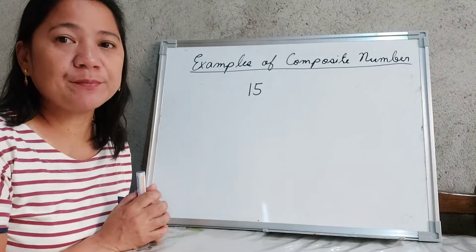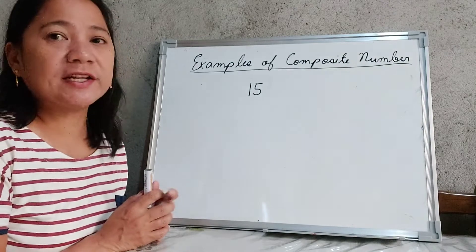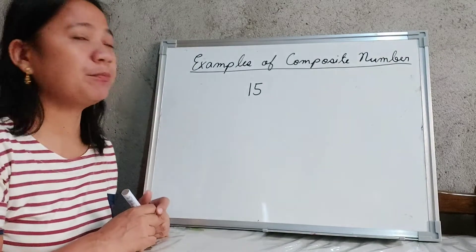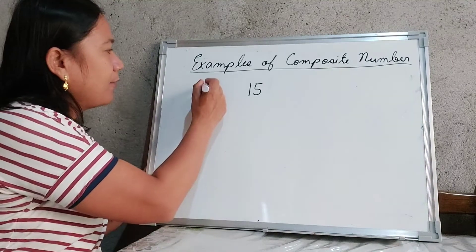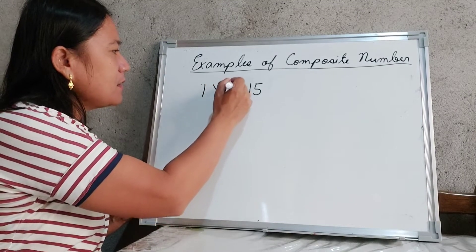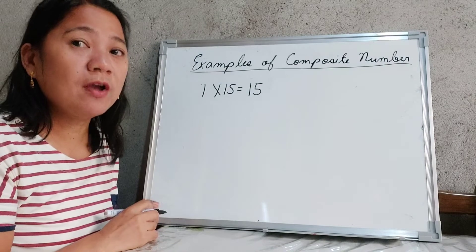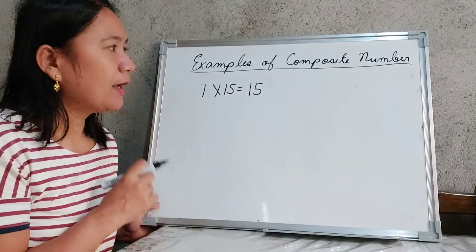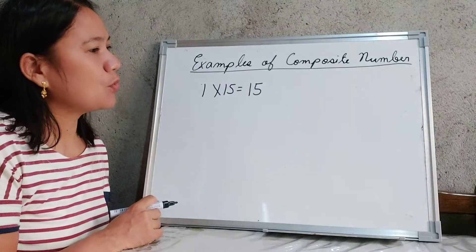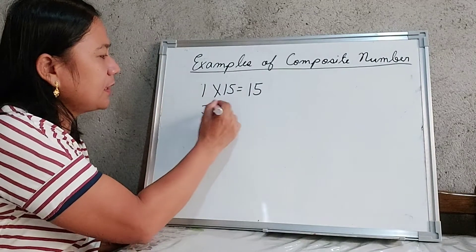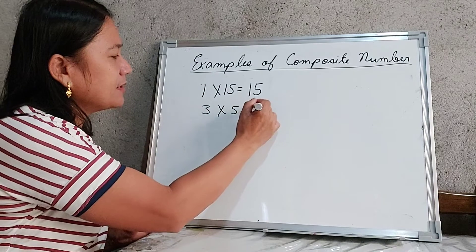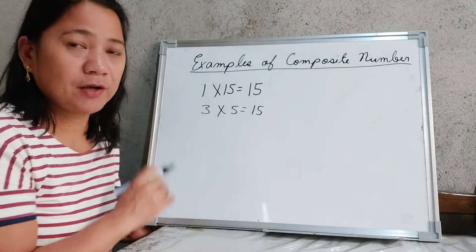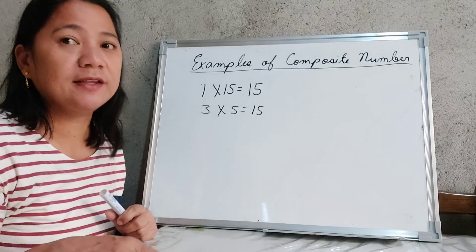Number 15 is also an example of a composite number. The first pair of factors is 1 times 15 equals 15. We can also find another pair: 3 times 5 equals 15. Since 15 has more than two factors, it is considered a composite number.